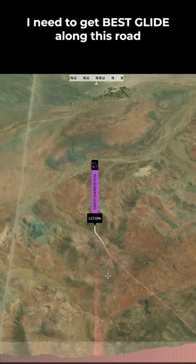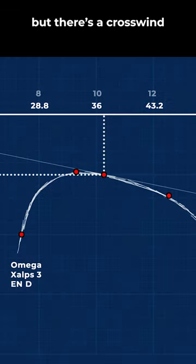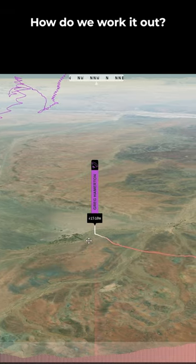And now I need to get my best glide along this road, but it's with a crosswind. How do we work that one out?